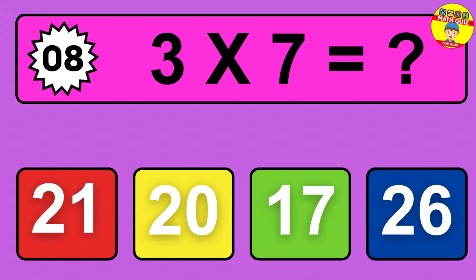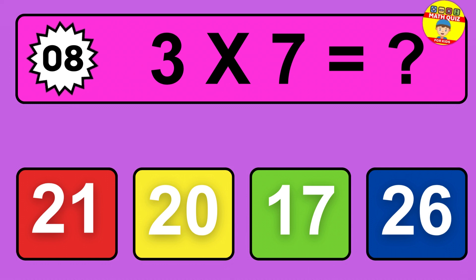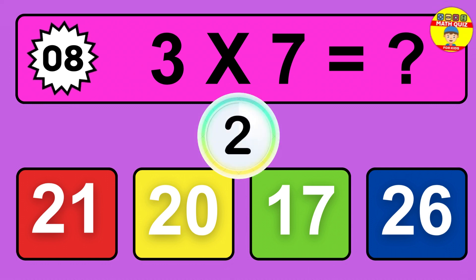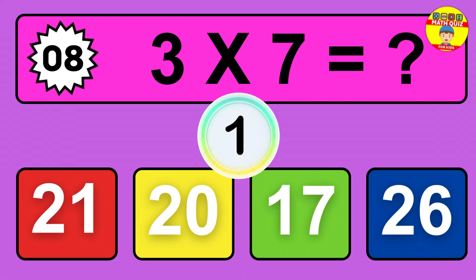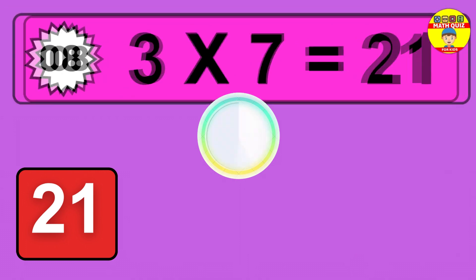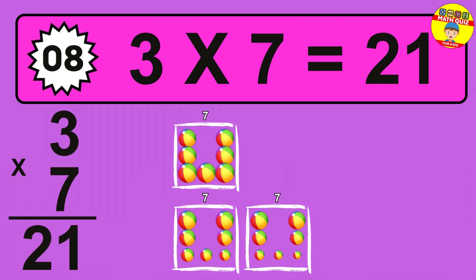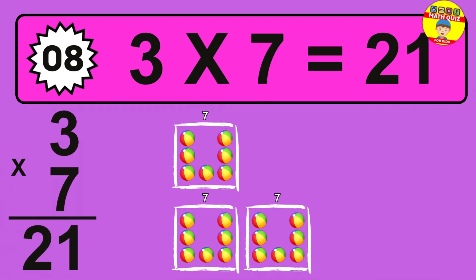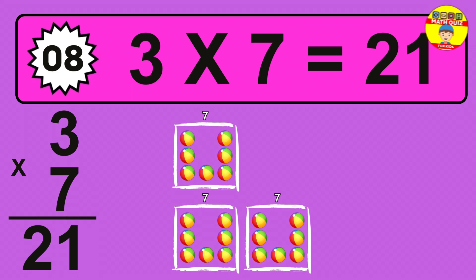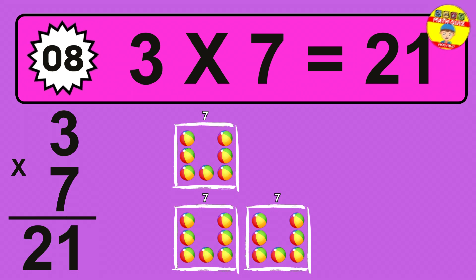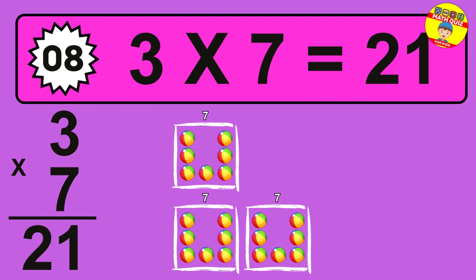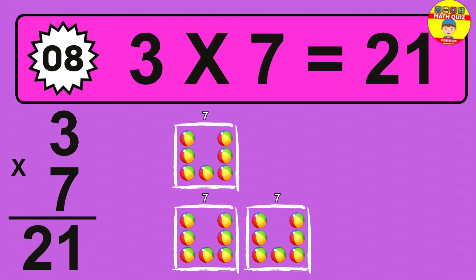Question 8. 3 times 7 equals what? The answer is 3 times 7 is 21. To calculate, we have 3 groups with 7 balls each one. So how many balls do we have? 21 balls.